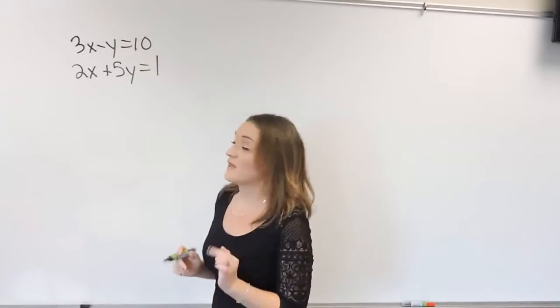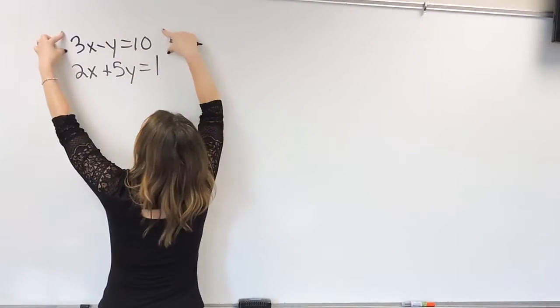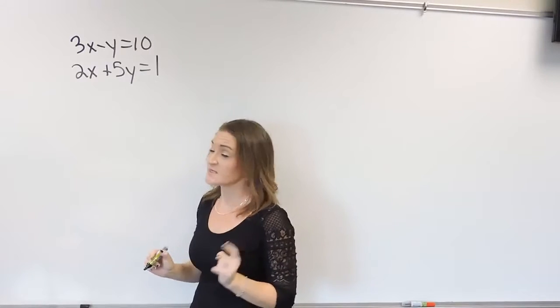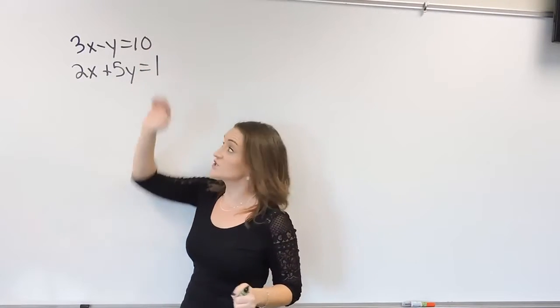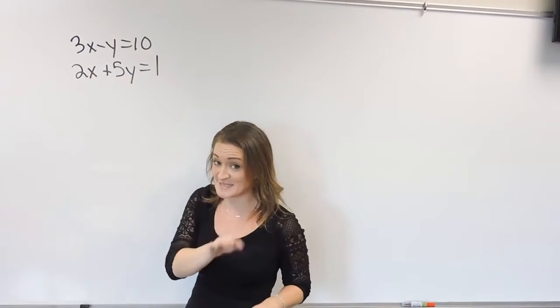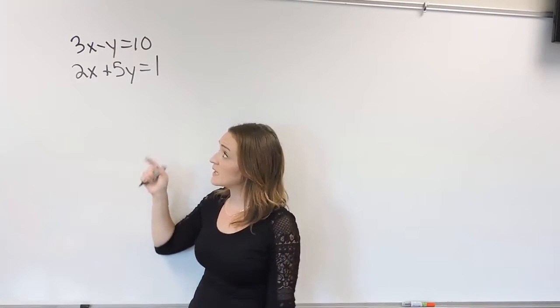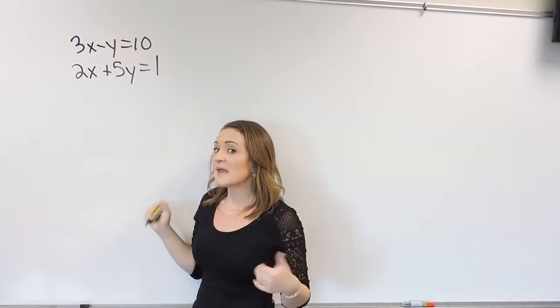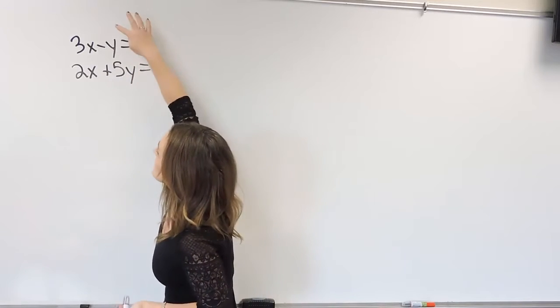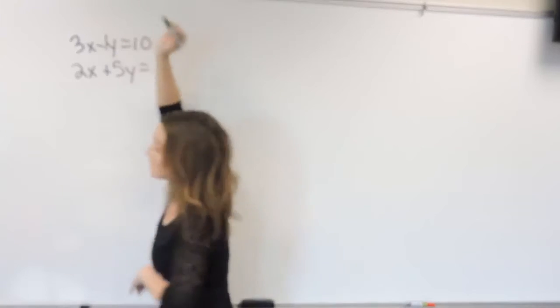So substitution method, the whole point of substitution method is to take one equation and substitute it into the other one. The way that we figure out how we do that is this. You could pick either equation, the first one or the second one. You can pick the x or the y for either one of them. It does not matter. Now, the best one to pick is to pick which variable you have that maybe has a 1 as a coefficient, or maybe a negative 1.